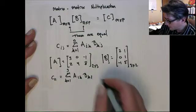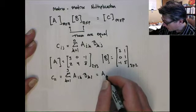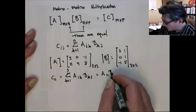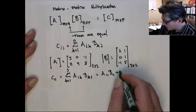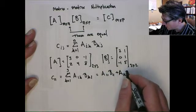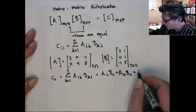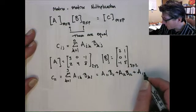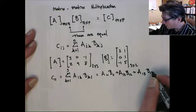And if you were to write that out, that would be a11 b11 plus a12 b12 plus a13 b13.